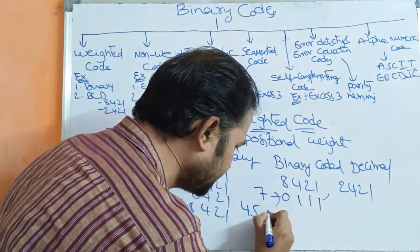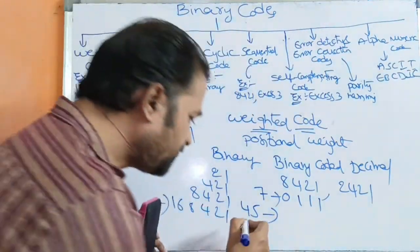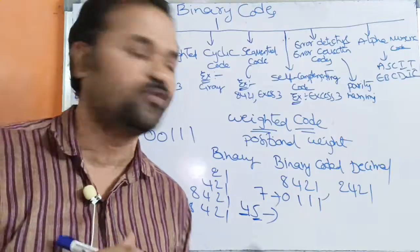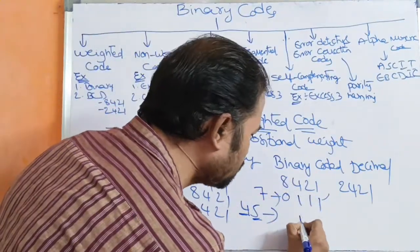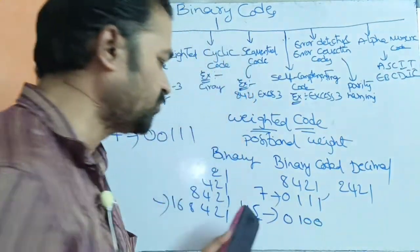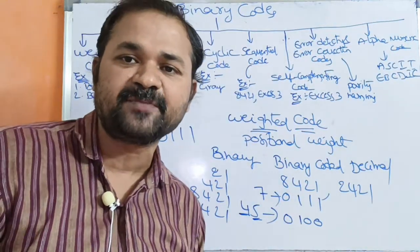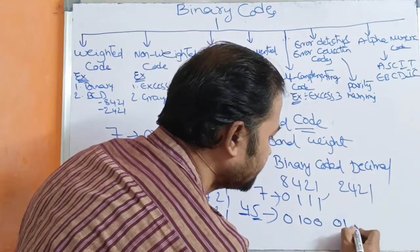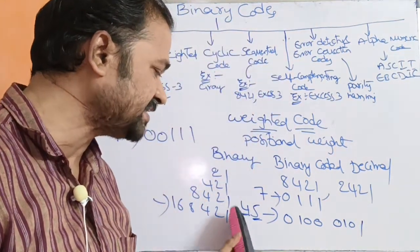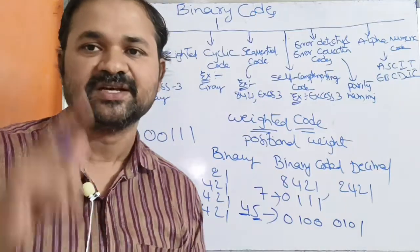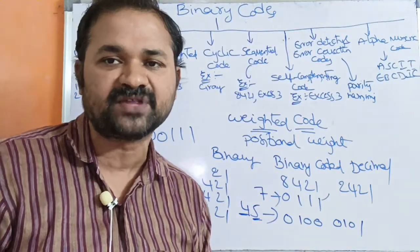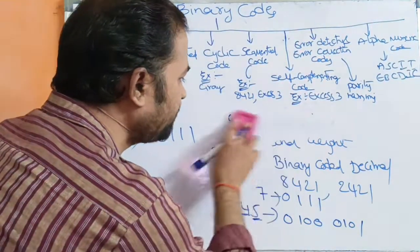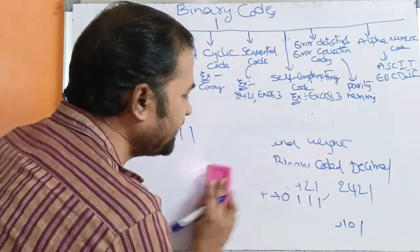Let us represent 45 in BCD notation. Here 4 is one decimal digit and 5 is another decimal digit. For representing 4, we require 4 bits. In place of the 4th position, we need to place 1, with the remaining positions as 0. For representing 5, we require 4 bits — 5 means sum of 4 and 1, so 0 1 0 1. So 45 is represented in BCD notation likewise. Each decimal digit is represented with the help of 4 bits. This is about weighted code — the best examples are binary and BCD. Binary means we may have any number of bits; BCD means 4 bits.